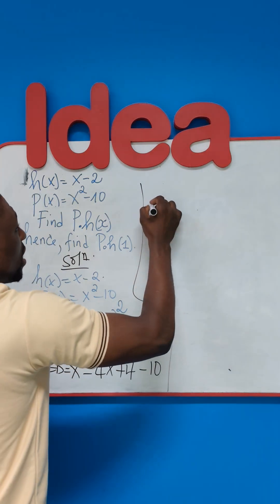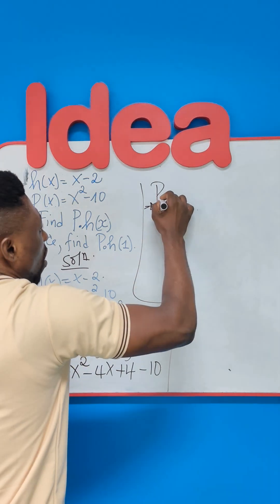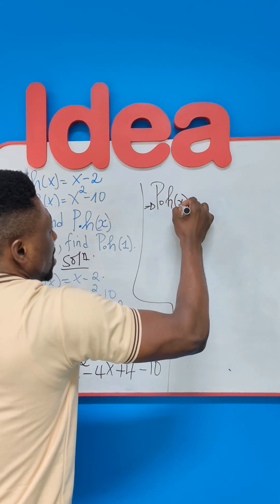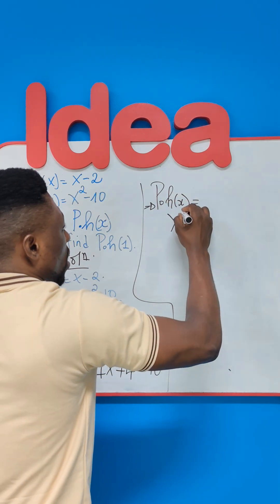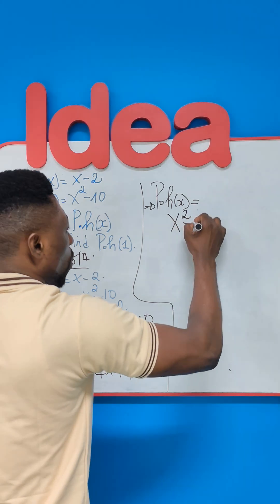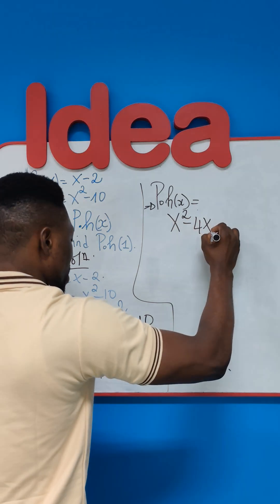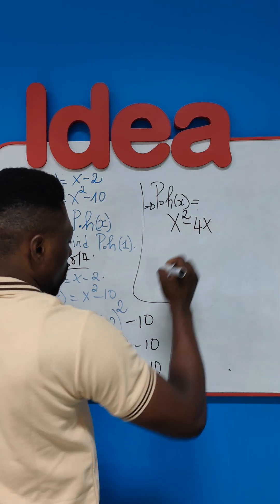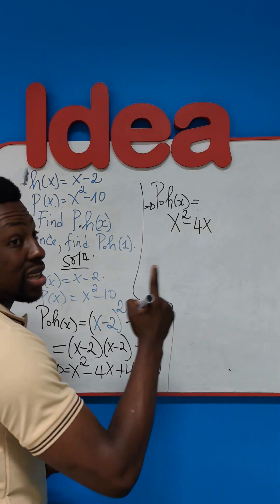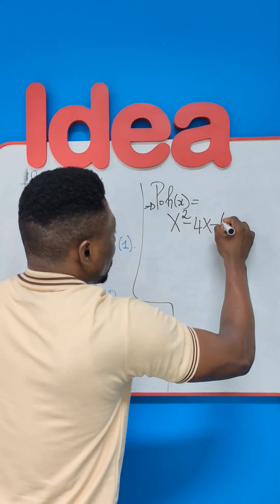If we further simplify this, it will mean that P of H of X would therefore be the function X squared minus 4X and then minus 6 because 4 minus 10 is minus 6.